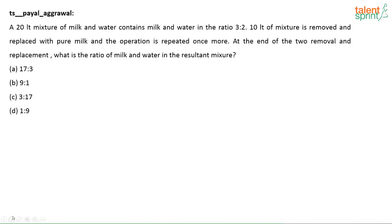The next question was posted by Payal Agarwal from the concept of removal and replacement. Try out this question: A 20-liter mixture of milk and water contains milk and water in the ratio 3:2. 10 liters of the mixture is removed and replaced with pure milk, and the operation is repeated once more. At the end of the 2 removal and replacement, what is the ratio of milk and water in the resultant mixture?